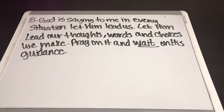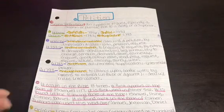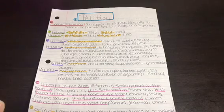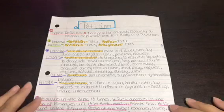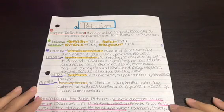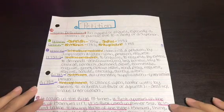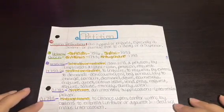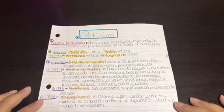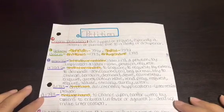That is the conclusion of the word study. Next I'll show you exactly how it looks on my paper. So I wanted to show you guys what my papers look like instead of writing on the whiteboard, so you can get a feel of what my complete word study looks like. For petition: number one — petition; number two — the English definition, an appeal or request, especially a solemn or humble one to a deity or a superior.